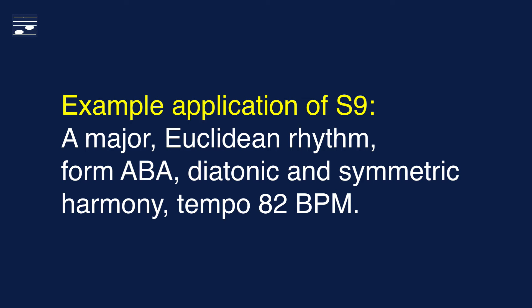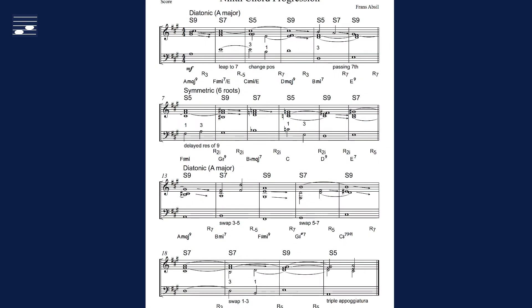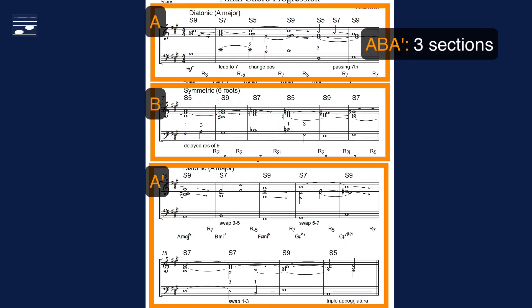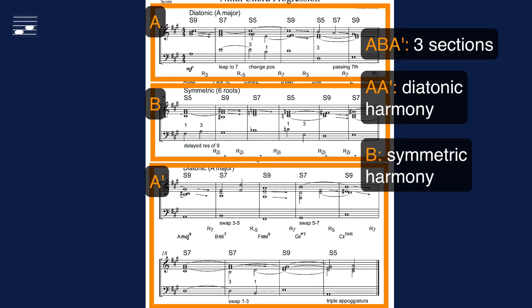And now let's create a somewhat longer application of the S9 in a musical texture at a relaxed tempo of 82 beats per minute. The key is A major, we will use an Euclidean rhythm, a ternary form ABA, and combine diatonic with symmetric harmony. We will first look at the chord progression and 4-part voice leading. Note that the symmetric harmony section lies outside the scope of this tutorial. The outer A sections contain diatonic harmony; the bridge is based on symmetric harmony.